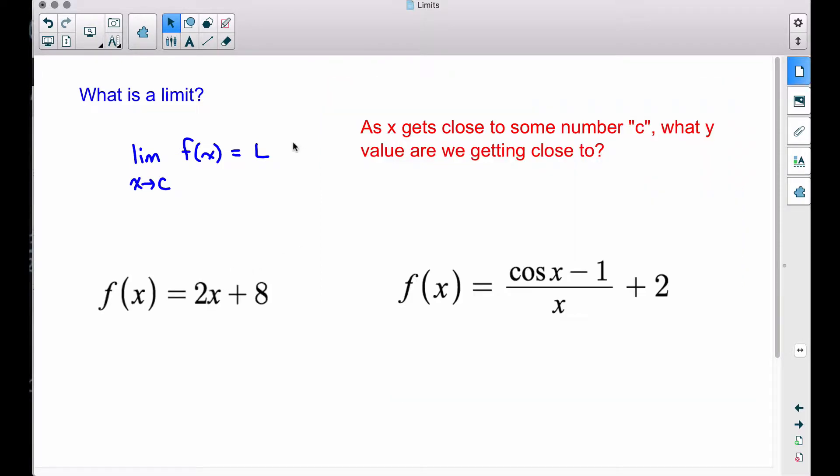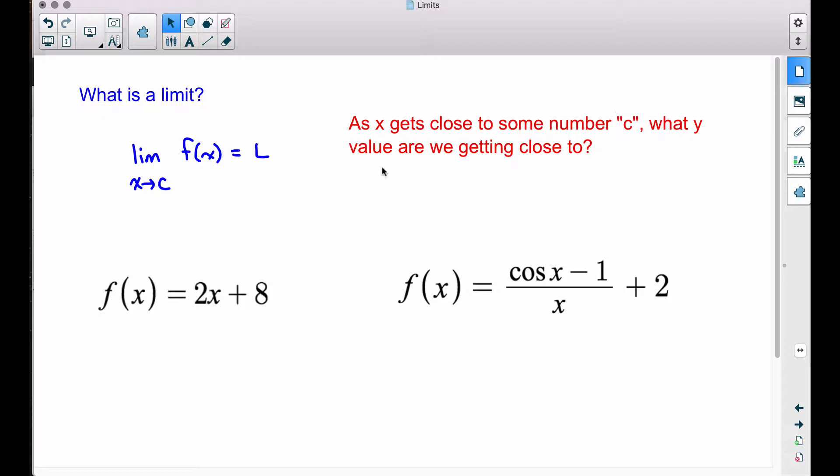Let's look at two examples. So we have this same notation, and the way we read this is the limit as x gets close to some number, we can call it c, a, or whatever. It can be any number we want. So the limit as x gets close to c of some function, what's its limit? What's it equal to? Well, here's how I think about it. As x gets close to some number c, as x approaches c, what y value are we getting close to? Well, let's look at two examples to illustrate this.